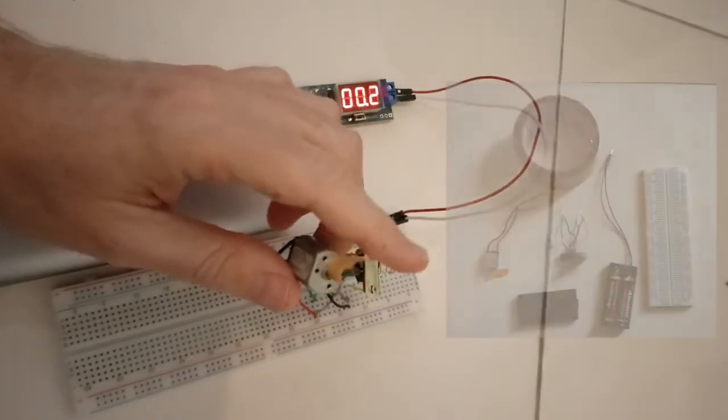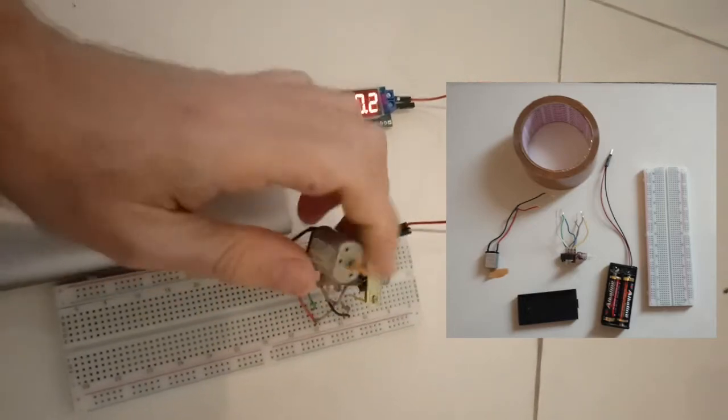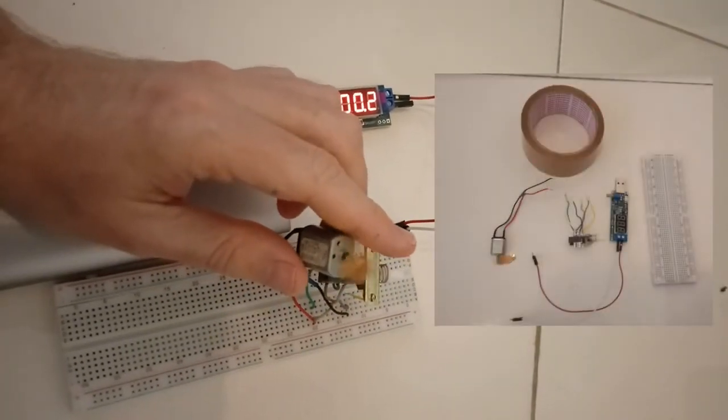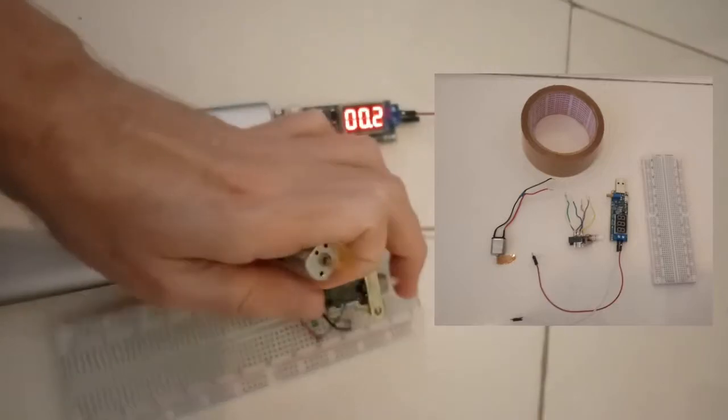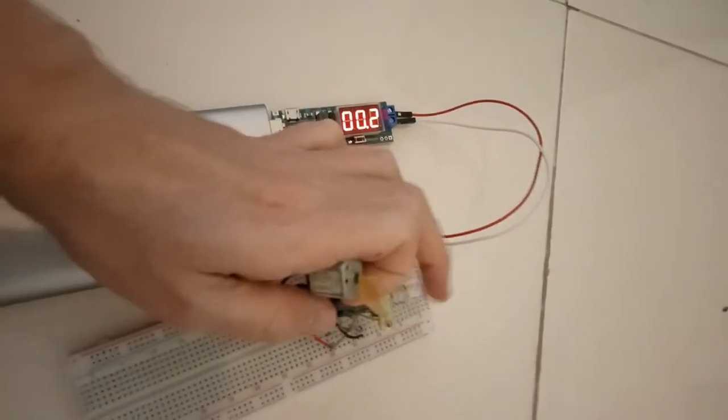You will need a collection of components including a breadboard, a DC motor, a DPDT switch, some sticky tape, and about 10 connecting leads.